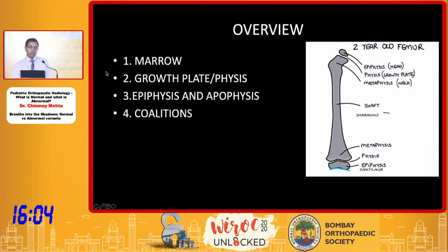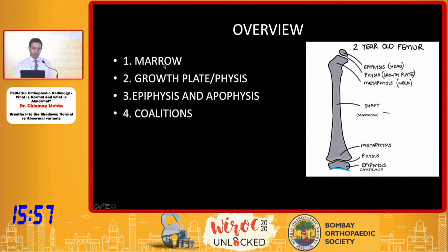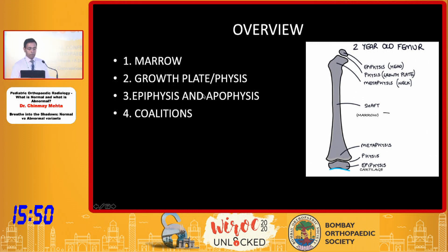I've divided this session into four parts depending on the long bone anatomy that we see. First is the marrow, mainly in the diaphysis and the metaphysis. Then we extend to the edges to see the growth plate and the physis, follow it up with the epiphysis and the apophysis, and if time permits, look at the coalitions.